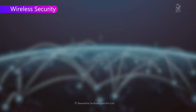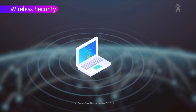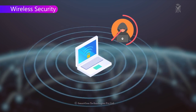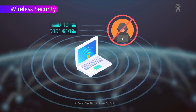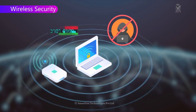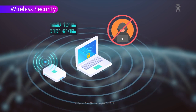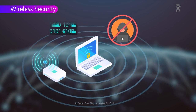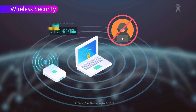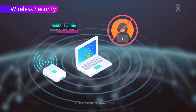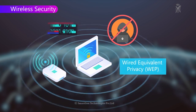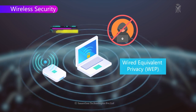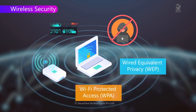Wireless Security is the prevention of unauthorized access or damage to computers or data using a wireless network, which includes Wi-Fi networks. The most common types of Wi-Fi security are Wired Equivalent Privacy (WEP) and Wi-Fi Protected Access (WPA).